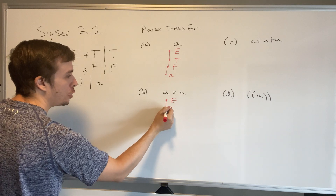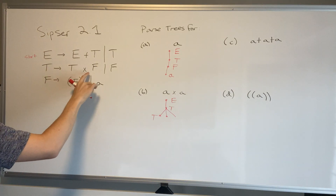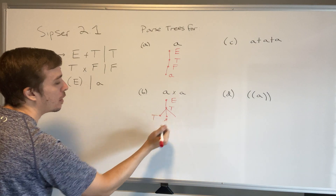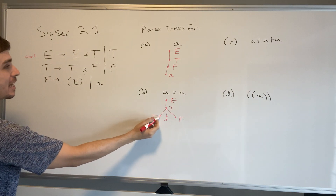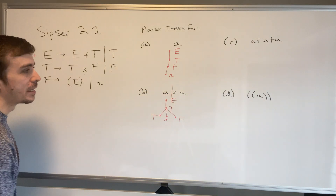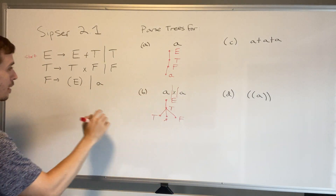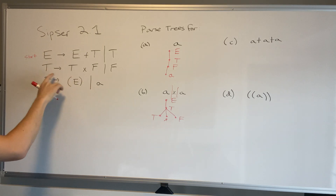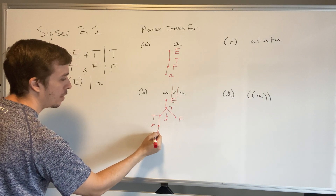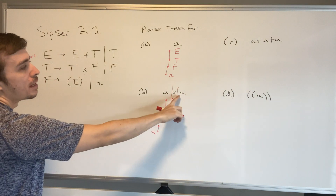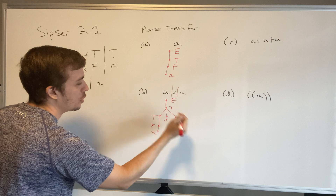So we're going to have three children under T: first T, then × (nothing under × because it's a terminal), and then F. The T on the left is responsible for making everything to the left of ×, which is just the letter 'a'. So T must go through F→a again. And then F on the right is going to make the things to the right of ×, which is just an 'a', and F can do that directly. So it's done pretty simply.